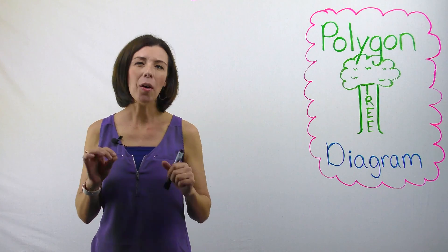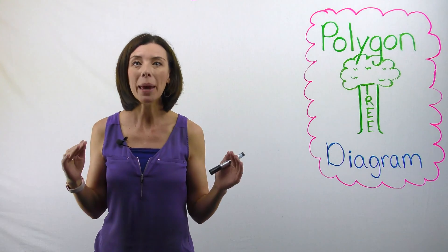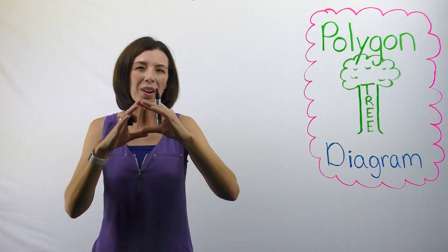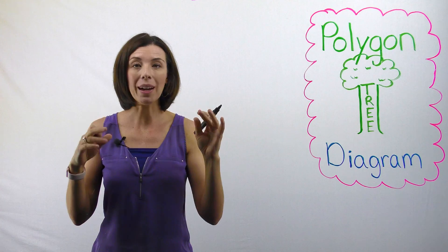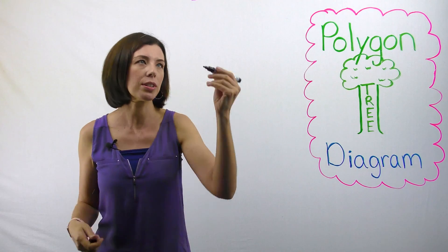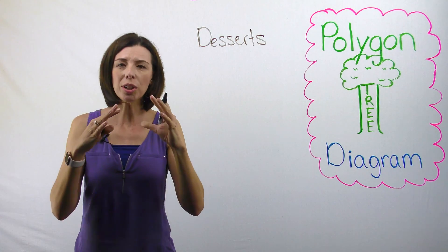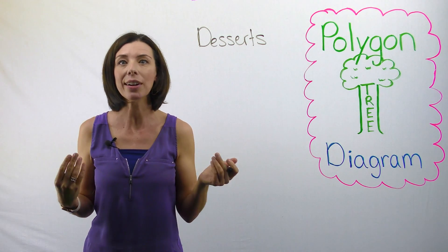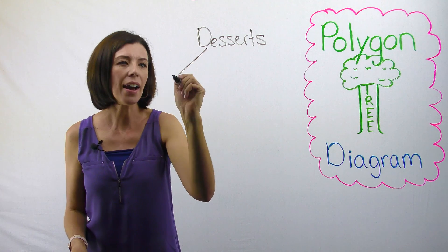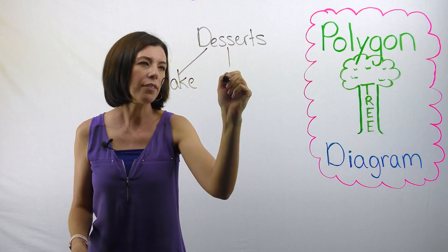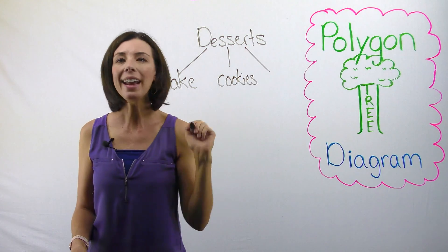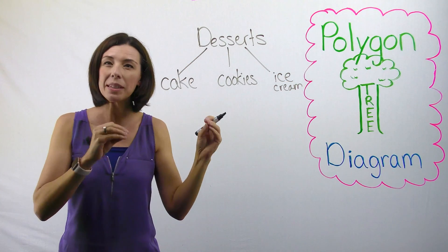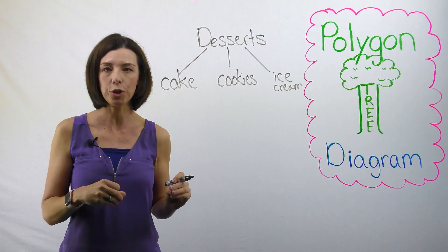First, let's talk about tree diagrams as far as a big picture sort of idea. In tree diagrams, usually what happens is we have one really overarching topic — let's say we're talking about desserts. Desserts is our really broad topic, and then I'm thinking about kinds of desserts that I could have in my house. Notice that I'm starting with a broad topic and starting to get more specific the further I go down on the tree diagram.